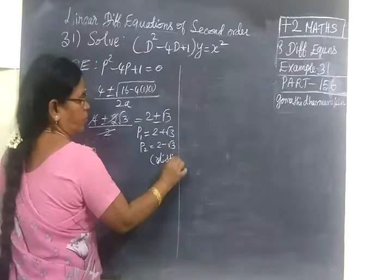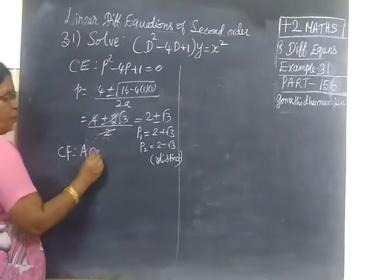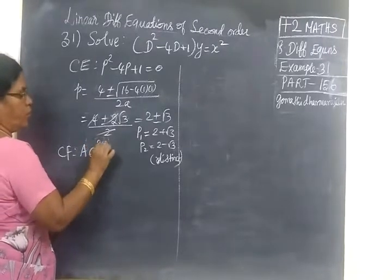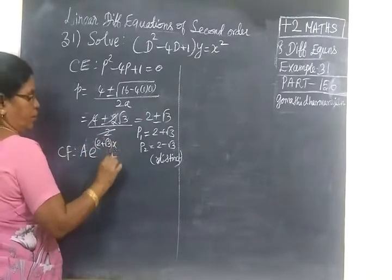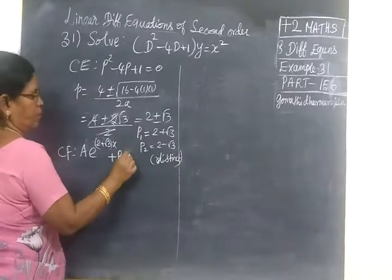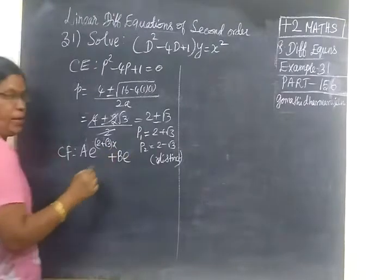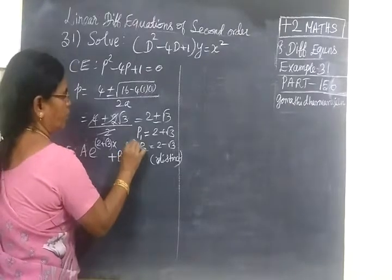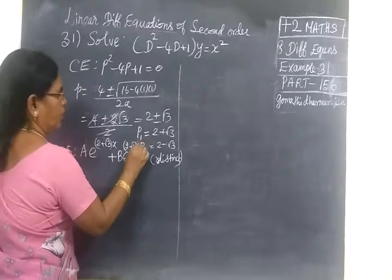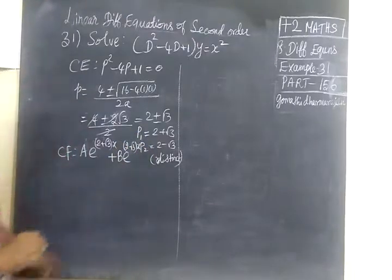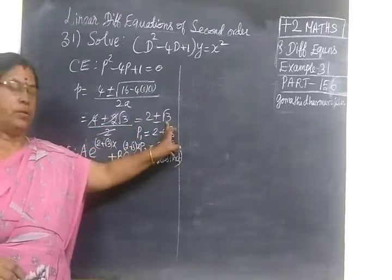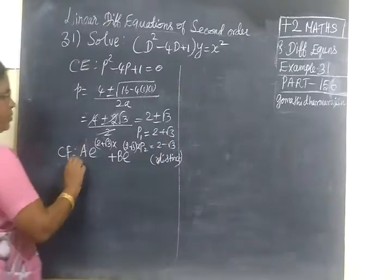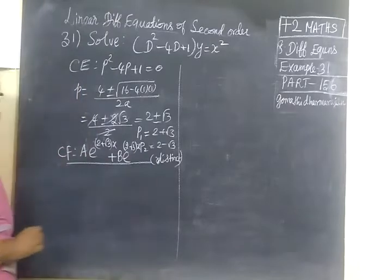For distinct roots, the complementary function is A·e^(P1·x) plus B·e^(P2·x), that is A·e^((2 + root 3)x) plus B·e^((2 − root 3)x). Since the roots are distinct, this is the complementary function.